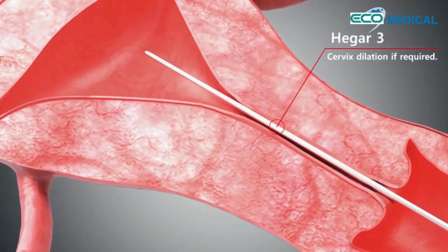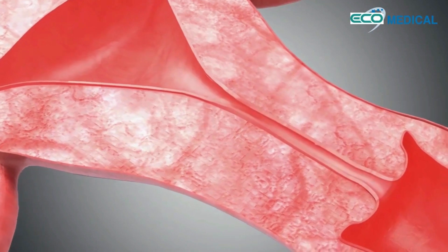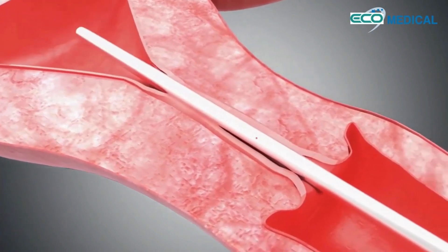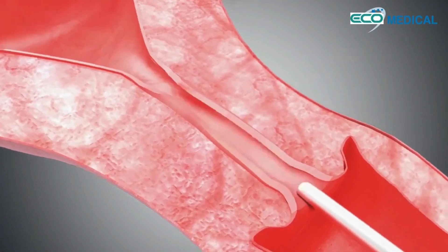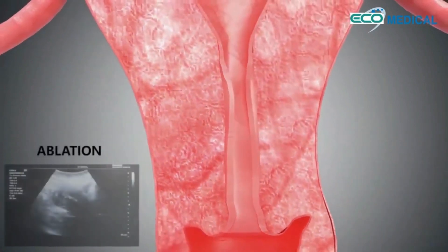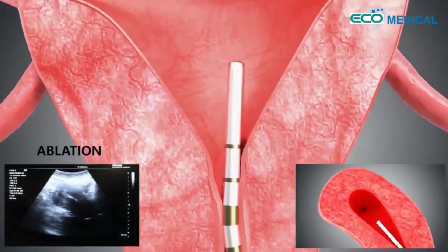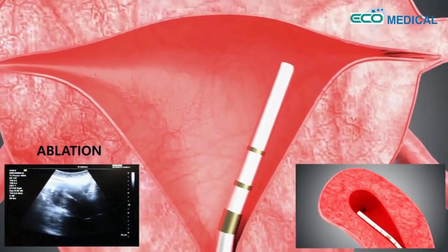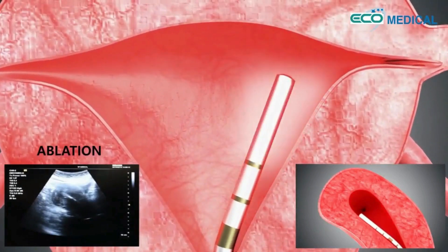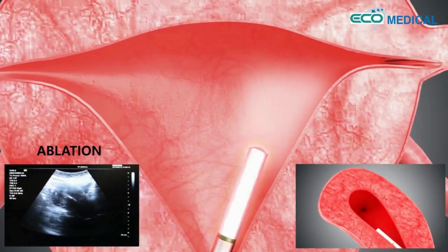If needed, a Hegar dilator is used to widen the cervix before inserting the EMT electrode. The practitioner can choose which areas of the uterus to ablate.